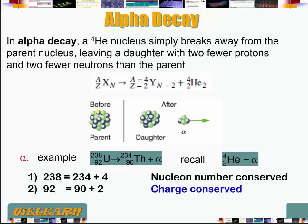In alpha decay, one of the three types of decays, a helium nucleus breaks away from the parent nucleus, leaving a daughter with two fewer protons and two fewer neutrons.